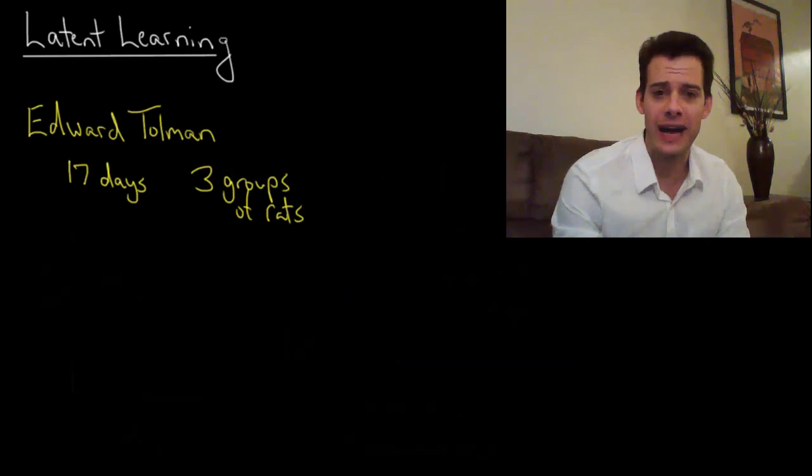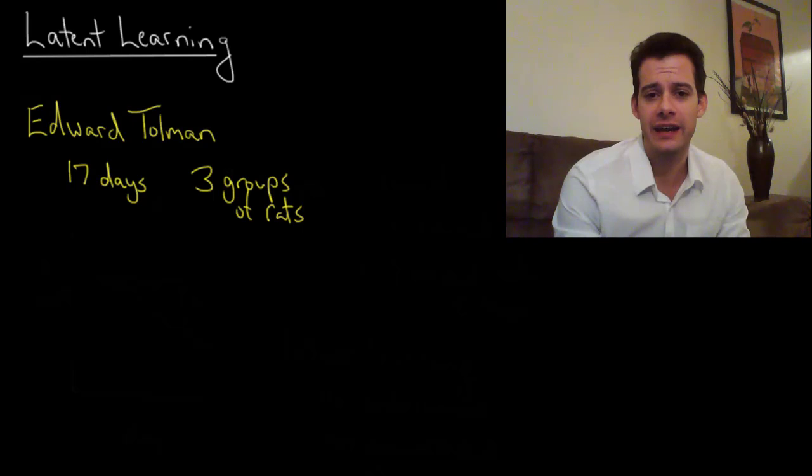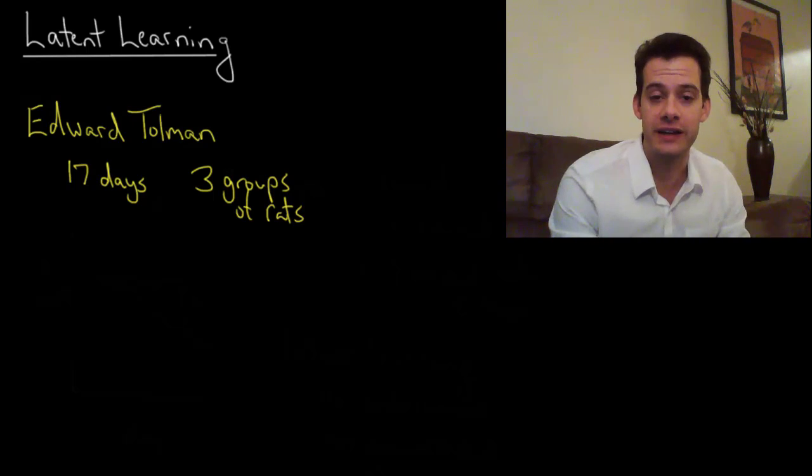Hi, I'm Michael Corayer and this is Psych Exam Review. In the previous video on observational learning, we saw that learning could occur without any direct reinforcement or punishment. The children could learn about behavior simply by observing the adults. This suggests that there's some sort of cognitive process going on while the children are observing. There's learning happening even though it's not being demonstrated yet.